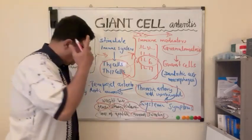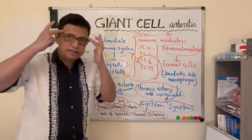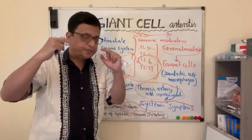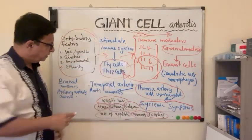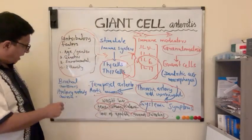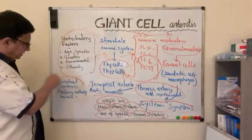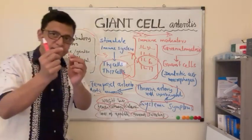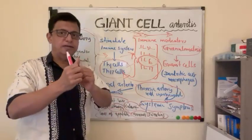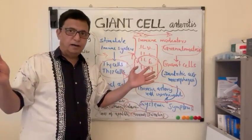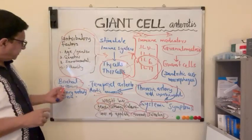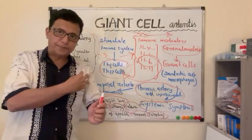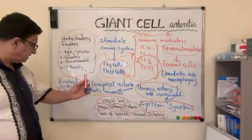The systemic and arterial involvement mainly affects the temporal arteries, ophthalmic artery, aorta, brachial arteries, and axillary arteries. As a result we can get aortic aneurysms, aortic dissection even, and you can hear brachial artery bruit and axillary artery bruit.